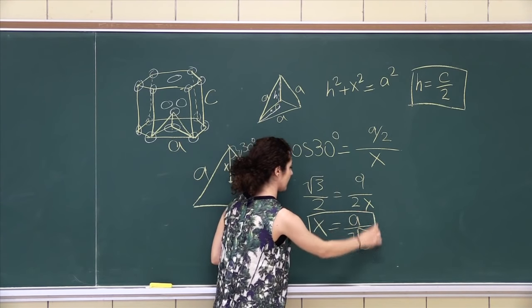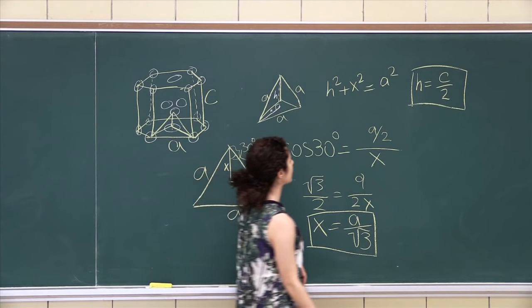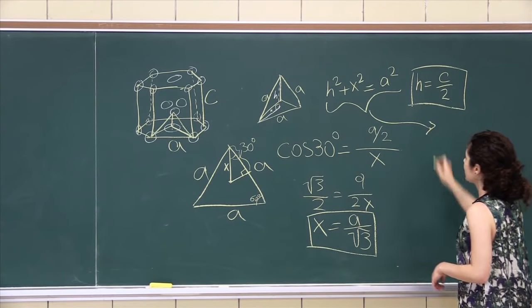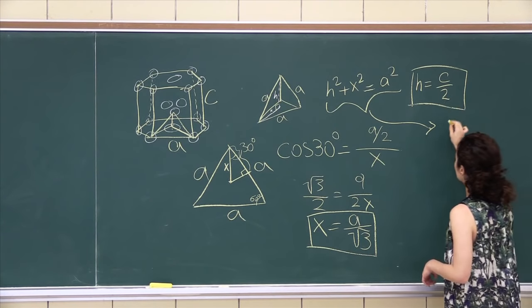Lovely. So this initial equation is what we're gonna continue over here. H squared, C over 2 squared,